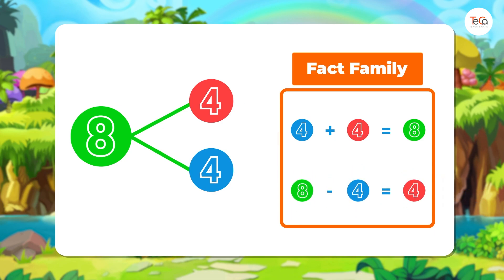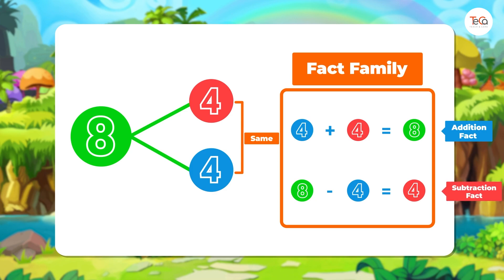So, you see, when the two parts are the same, the fact family includes just one addition fact and one subtraction fact.